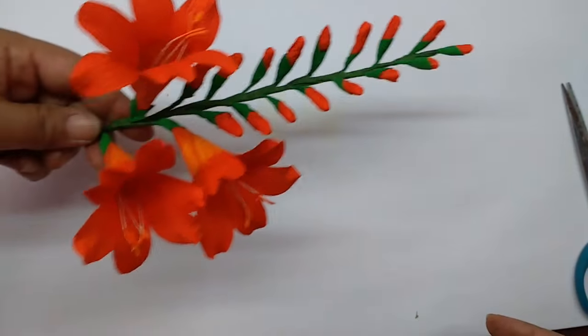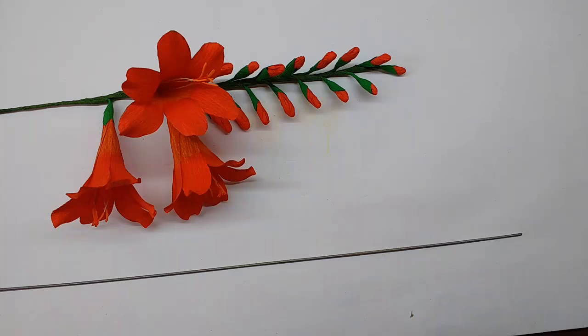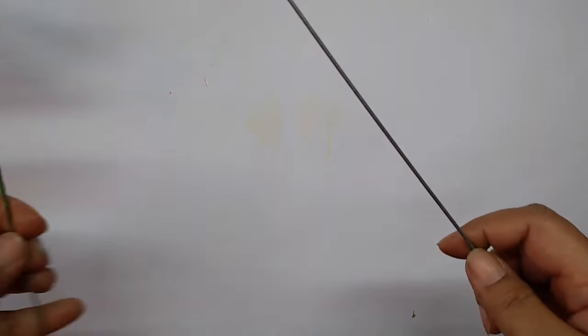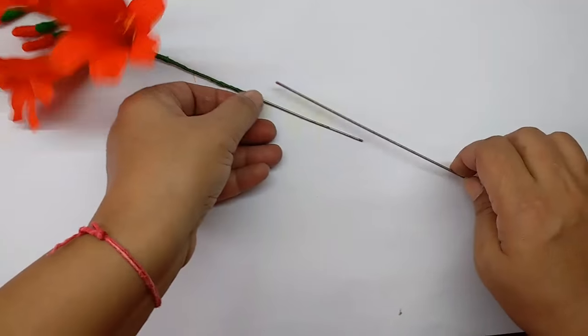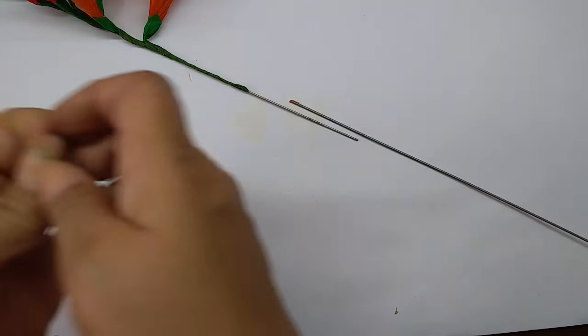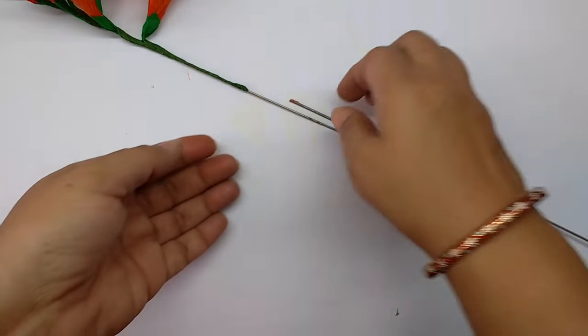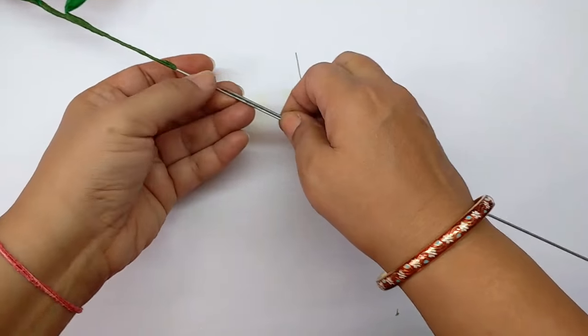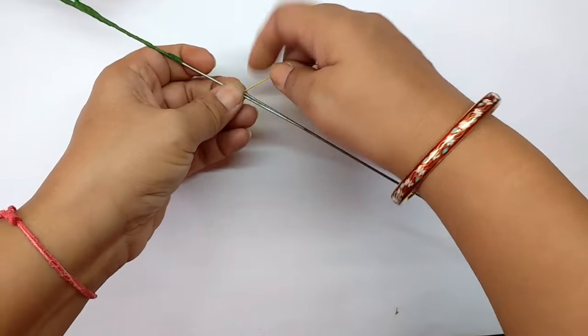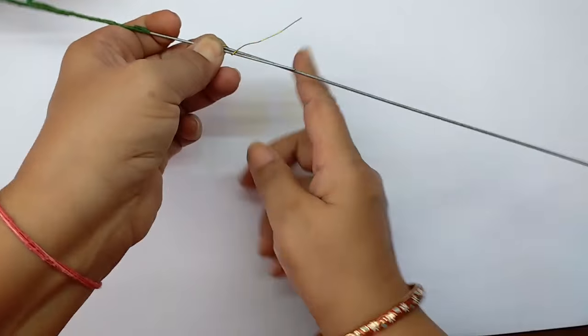This is how the stem would look. Now take another thick wire, so we have to attach these. Take a small piece of thin wire and just bind it on both the thick wires.